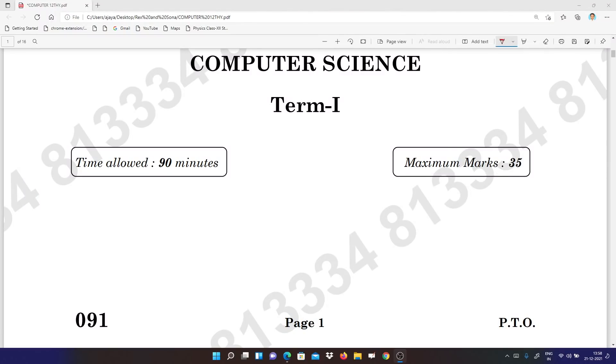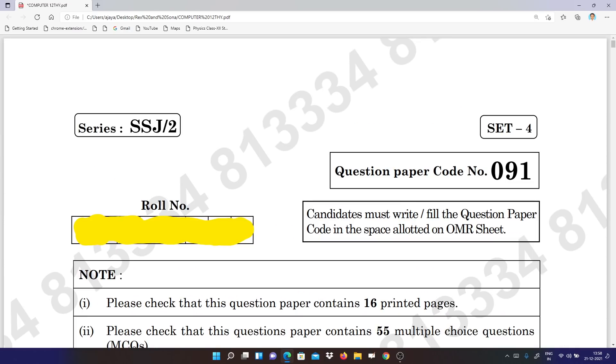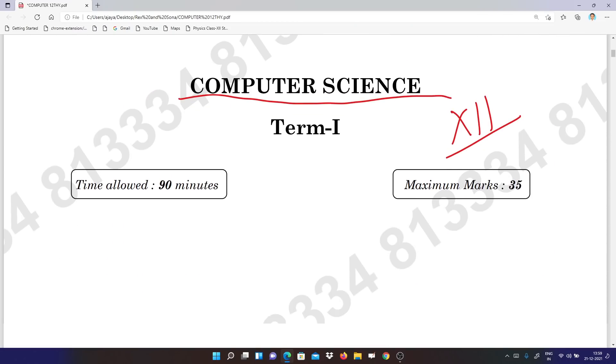Hello everyone, this is your Computer Science answer key for Class 12th and I'm going to show you the answers. You can open your question paper, this is question paper code number 091, SET-4. Those who have this question paper set, quickly open your question paper and get ready. I'm telling you the solution.